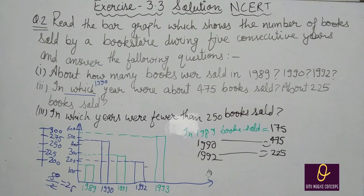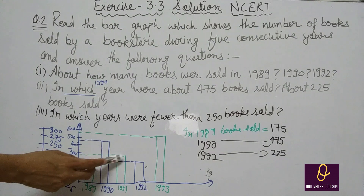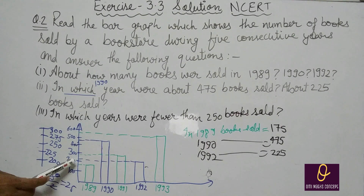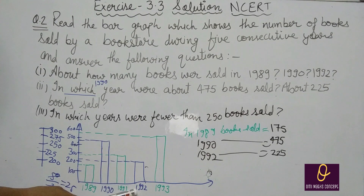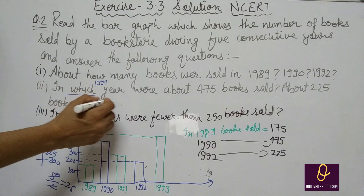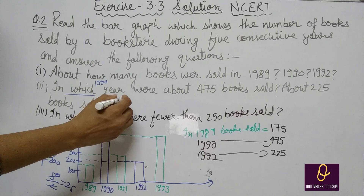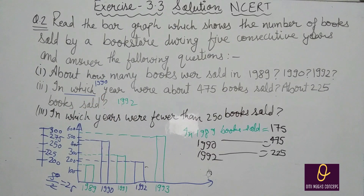Next: about 225 — अब 225 देख लीजिए. 225 कितने में है? यह 200 से थोड़ा ज़्यादा. यह किसके लिए है? 1992 के लिए. तो आप note कर देंगे: in 1992, there were about 225 books sold.